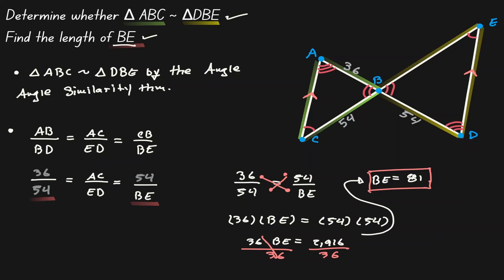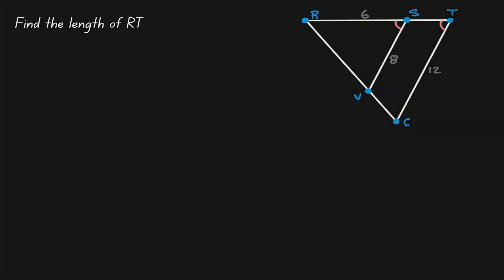Let's take a look at another example. The objective is to find the length of RT, which is the upper part of this figure. Notice that the figure on the right-hand side contains two overlapping triangles: RSB and RTC. Let's draw each of those triangles separately.